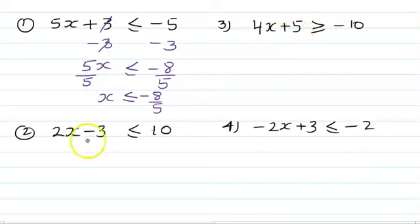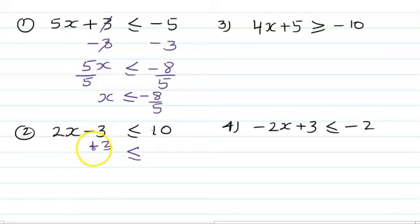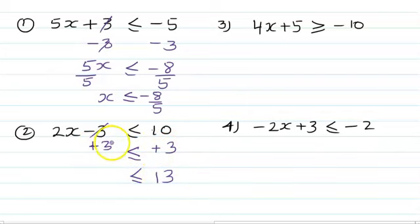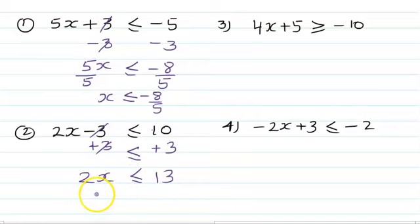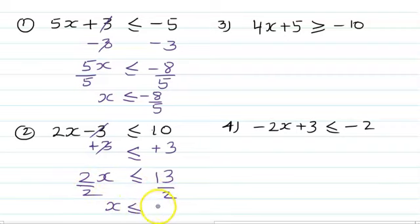Question 2: 2x minus 3 less than or equal to 10. What you need to do? Reverse of minus 3 is plus 3 — add plus 3 both sides. 10 plus 3 is 13, and the minus 3 cancels, leaving 2x. Next step: divide by 2. Once you divide by 2, you get x less than or equal to 13 over 2, or 6.5. Either form is acceptable.